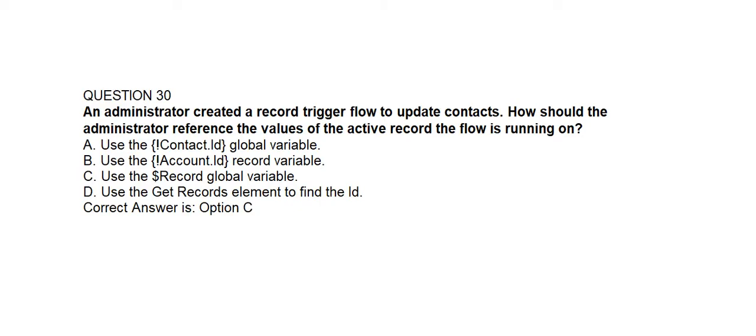Question number thirty. An administrator created a record-trigger flow to update contacts. How should the administrator reference the value of the active record the flow is running on? Option A: Use the Contact ID global variable. Option B: Use the Account ID record variable. Option C: Use the record global variable. Option D: Use the Get Records element to find the ID. Correct answer is Option C: Use the record global variable.